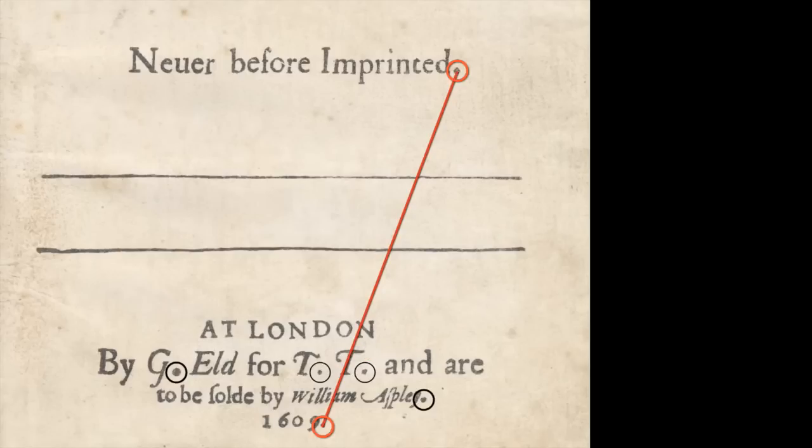Is there any other dot that's drawing attention to itself? Yeah, the G dot is only about ten times the size it's supposed to be, and so let's connect it to the D dot and to the 1609 dot. And we find we have a perfect right-angled triangle.